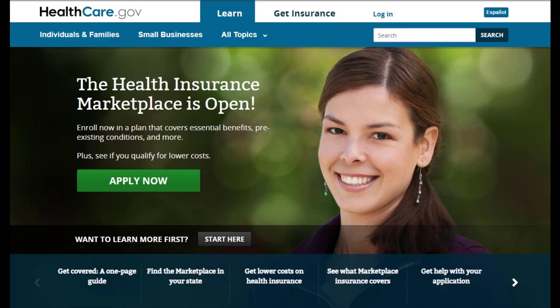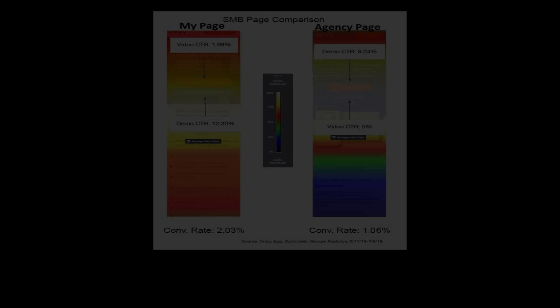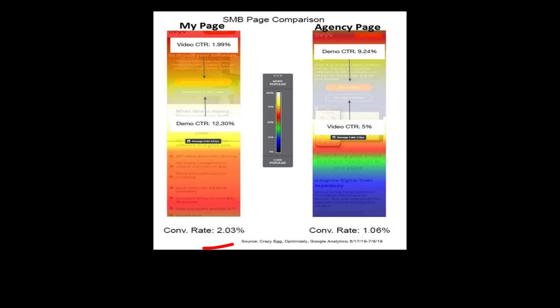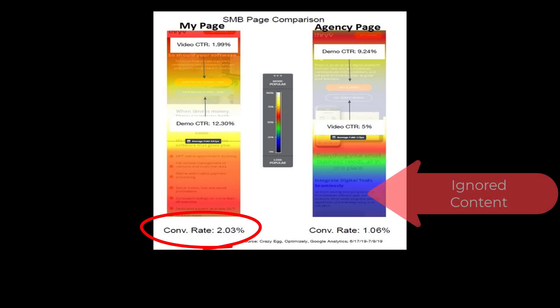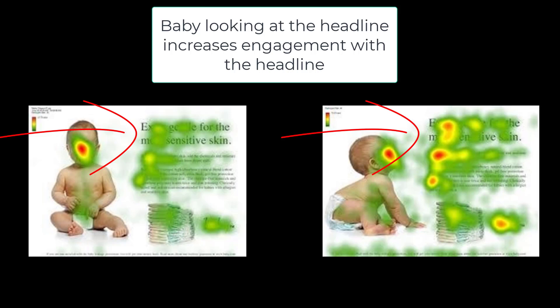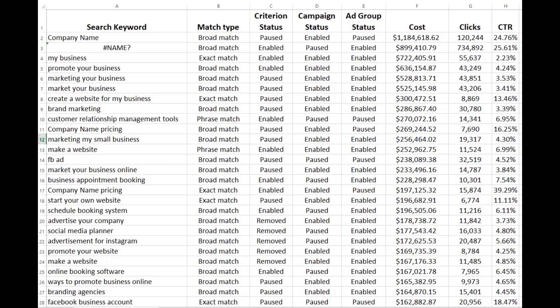Even the images you use will either help you grow your online customer base or repel them. We can easily see this with heat maps and how people look at your marketing material. Images can lead people to read more of your content or ignore it and bounce from your page. Common wisdom is to have a smiling woman look at your potential customer — basically looking back at them from the page — but in testing, this actually pulls eyes away from the marketing message and lowers conversion rate, eating into your three seconds.